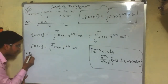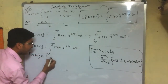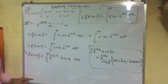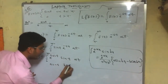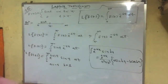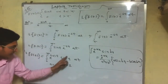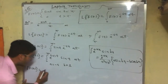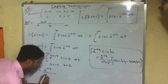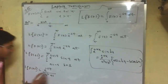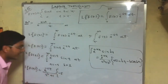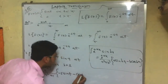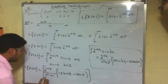Applying this formula to the integral from 0 to π of e to the power minus st times sin(t) dt, I compare: a corresponds to s (with the negative sign already in the exponent), and b equals 1. So the result is e to the power minus st divided by (s² + 1), times [−s sin(t) minus cos(t)], evaluated from 0 to π.